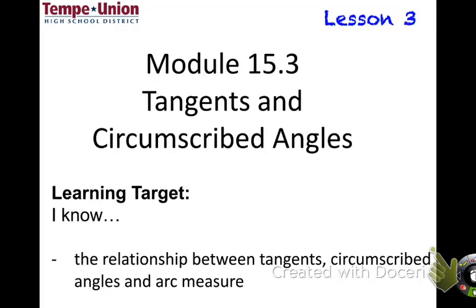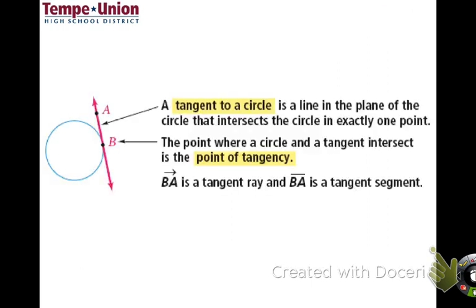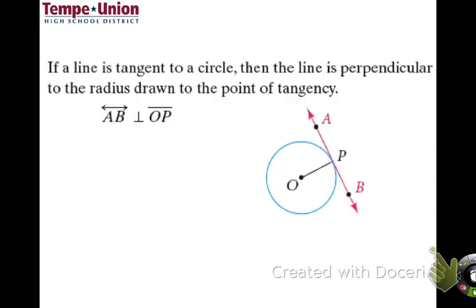Today we're going to learn section 15.3, about tangents and circumscribed angles. The learning target is to know the relationship between tangents, circumscribed angles, and arc measure. A tangent to a circle is a line that intersects the circle in exactly one point — that's called the point of tangency. We also have ray BA and BA as a tangent segment, which is just from point B to point A.